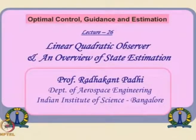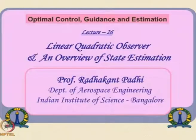Let us continue with our lecture series. This is a different topic since we have seen all these 25 lectures before. Here we are talking about estimation ideas or observer ideas. Let us see, to begin with, a little bit on linear quadratic observer and some sort of an overview of state estimation. I am not talking about detailed derivations here, which we will do in the next couple of lectures anyway.